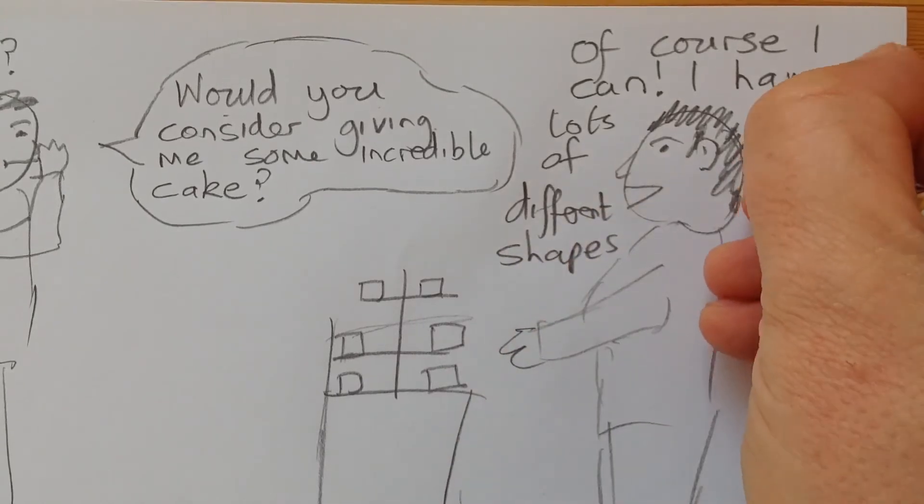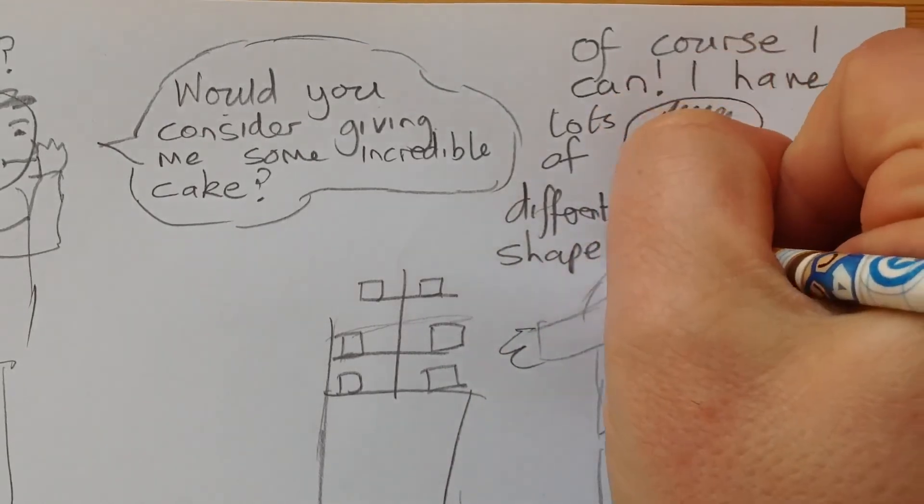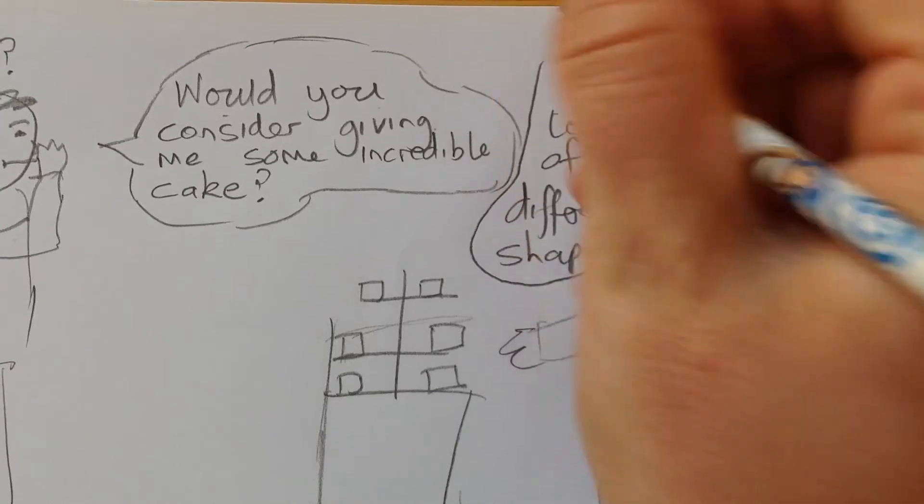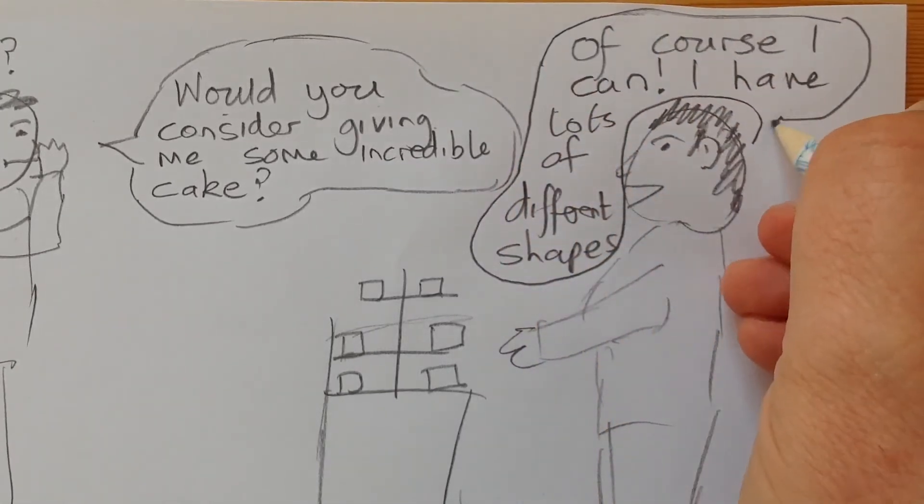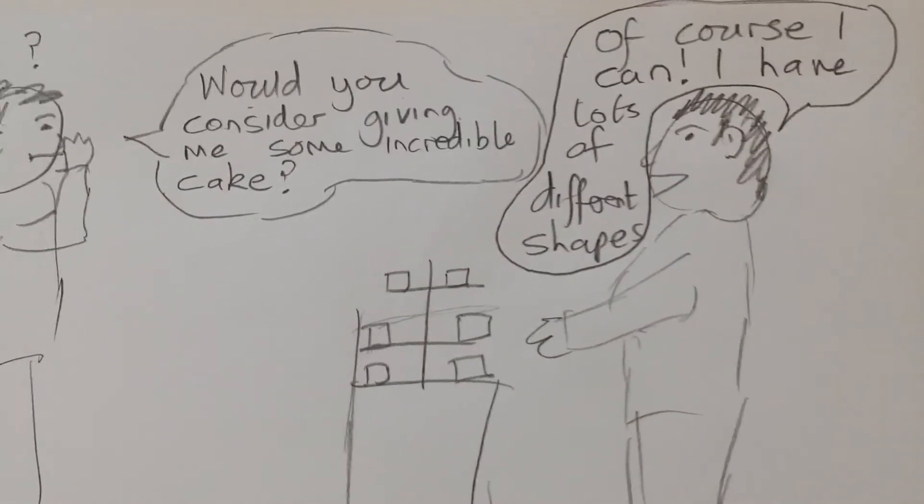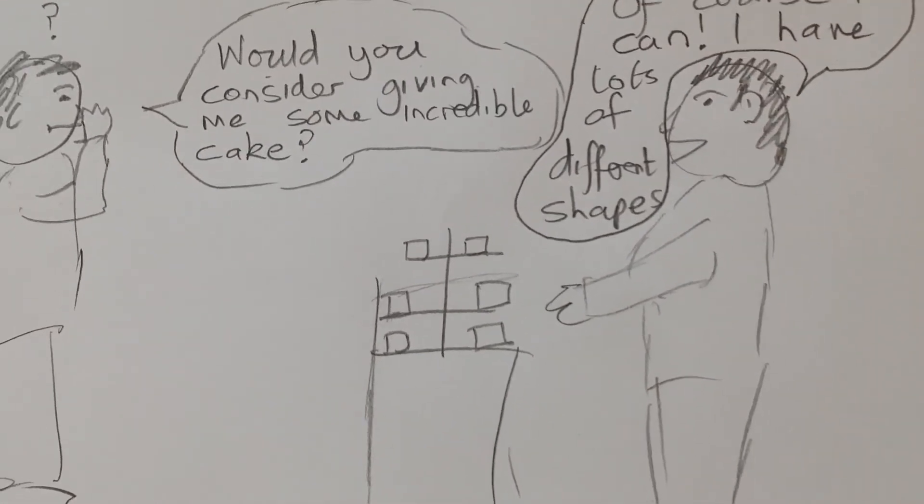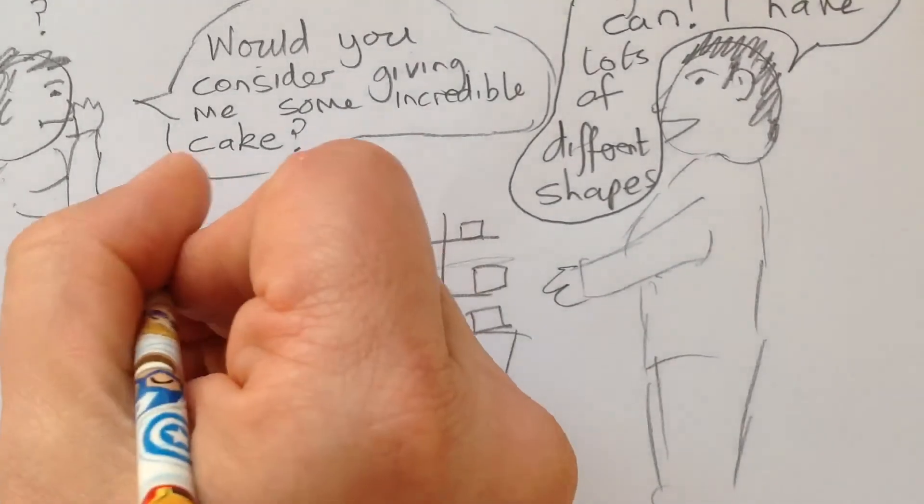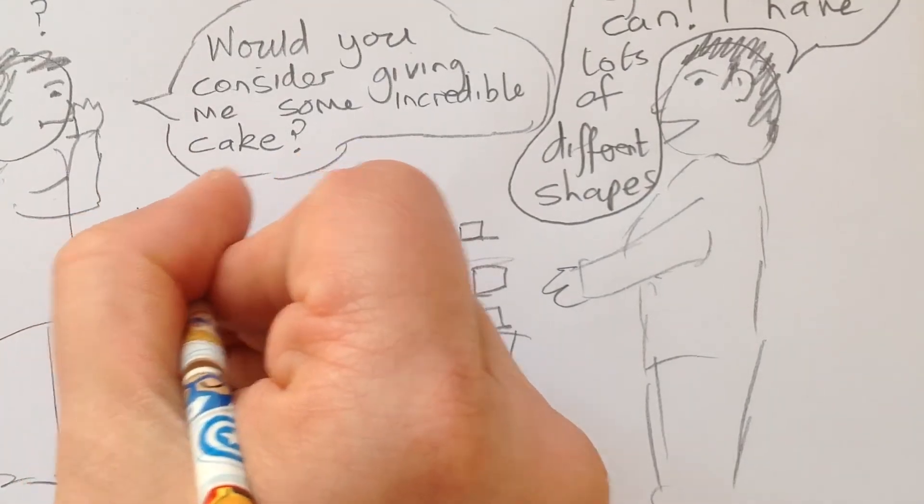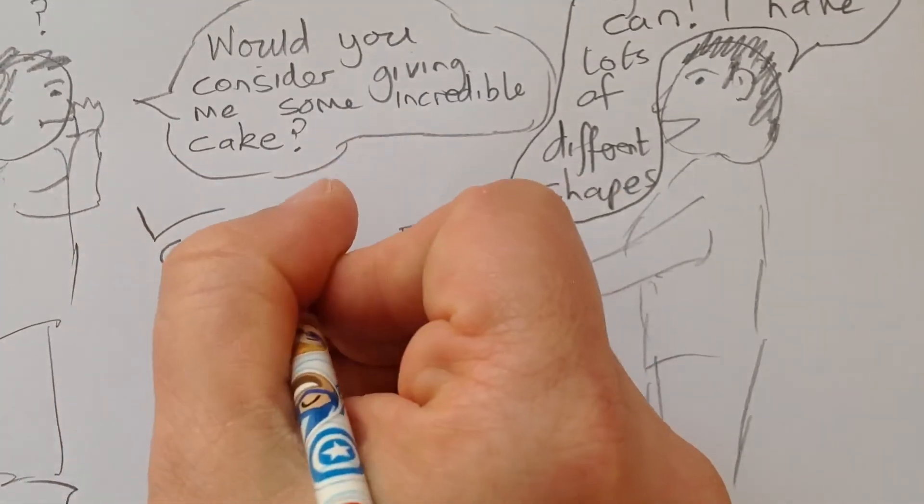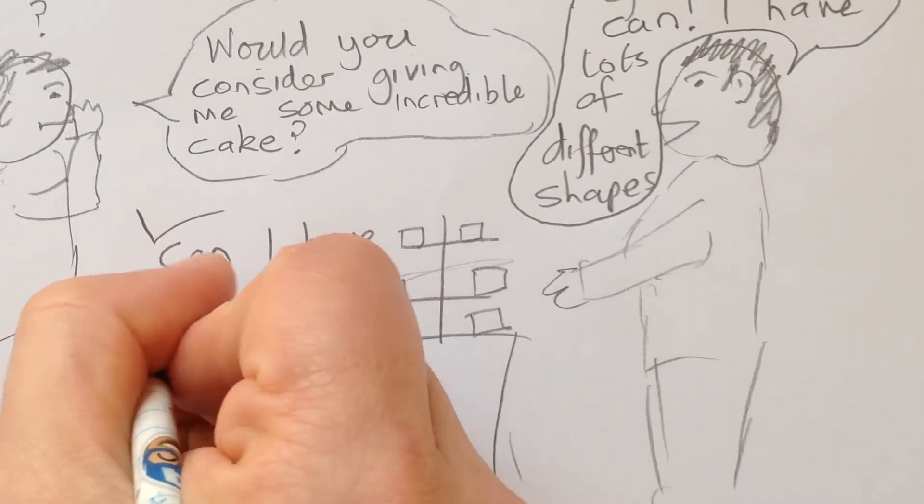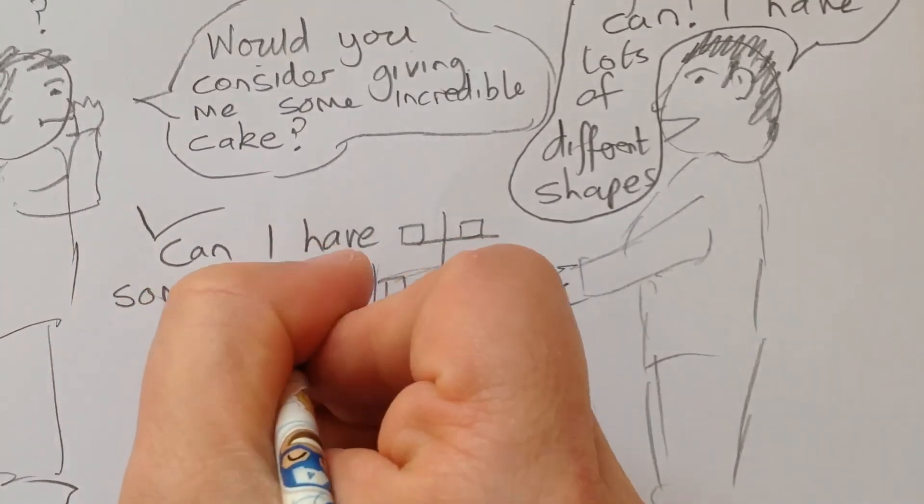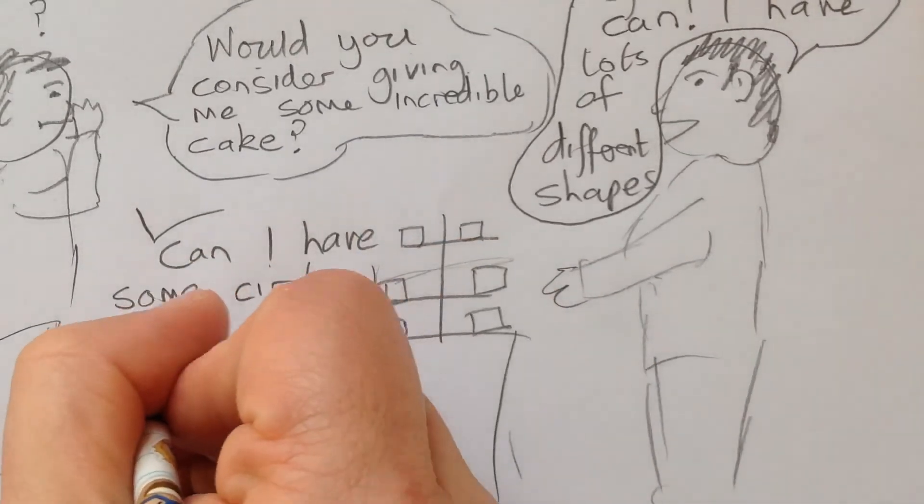Well this is going to be a very interesting speech bubble. I think I might have just taken his nose out there. Not to worry. Of course I can. I have lots of different shapes. Oh, can I have some circle ones? Circle is another one of our words. Can I have some circle ones?